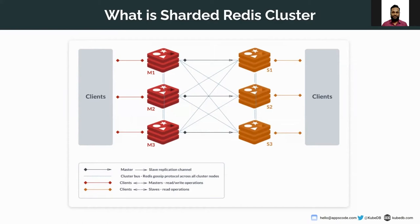Clients can connect to any master or slave to perform database operations, or connect using a service. In each shard there is one master and one replica, so they hold the same copy of the data. The replica always tries to replicate the master and keep up with it.